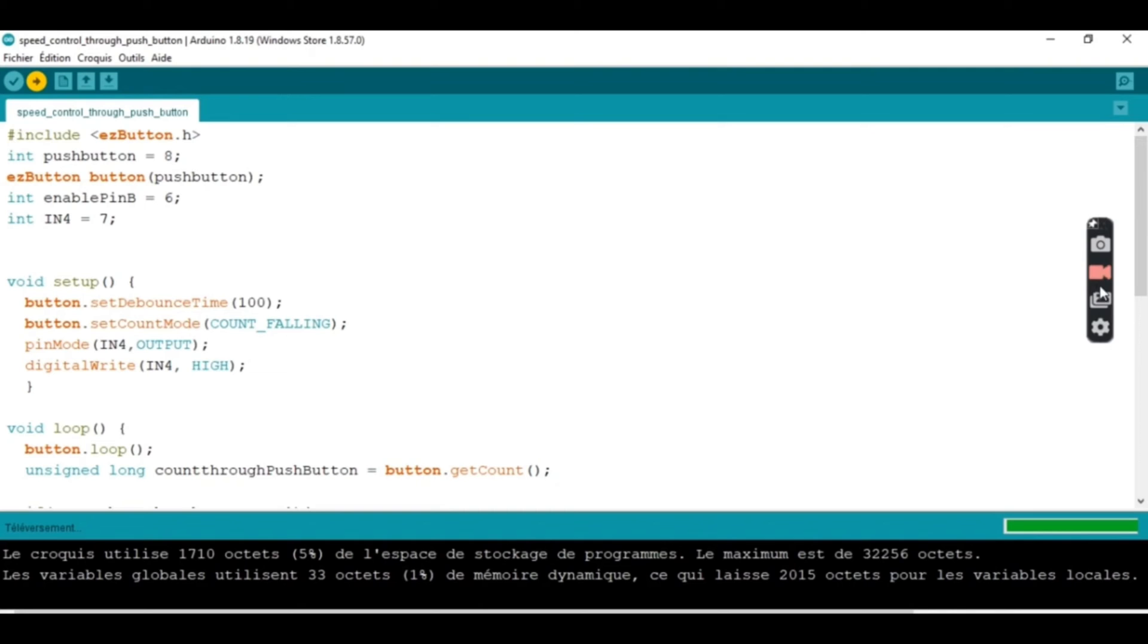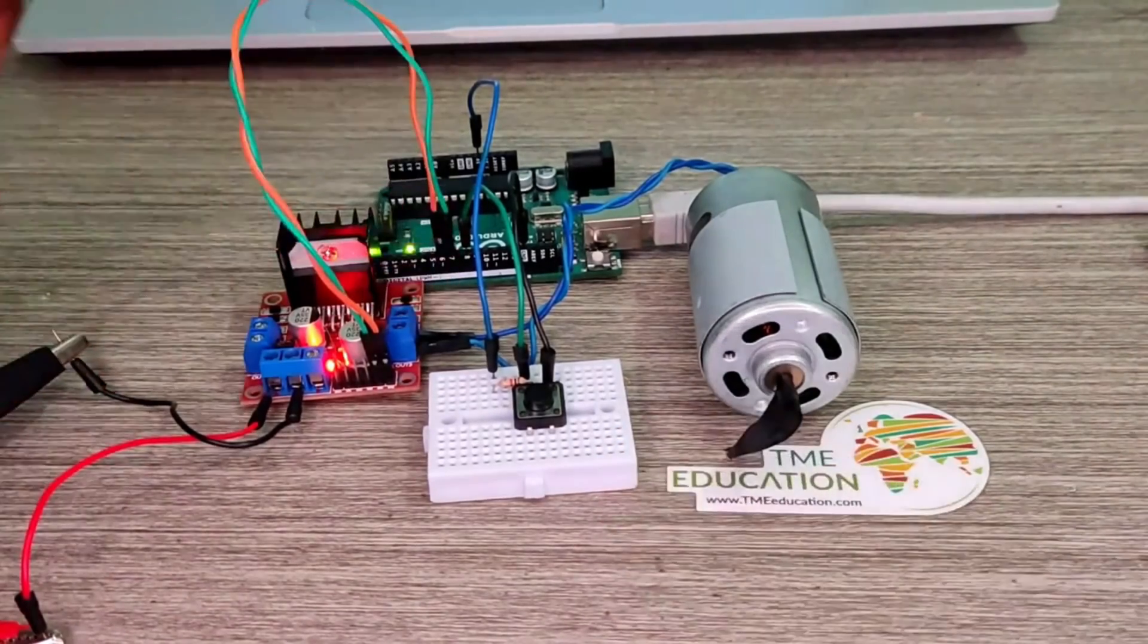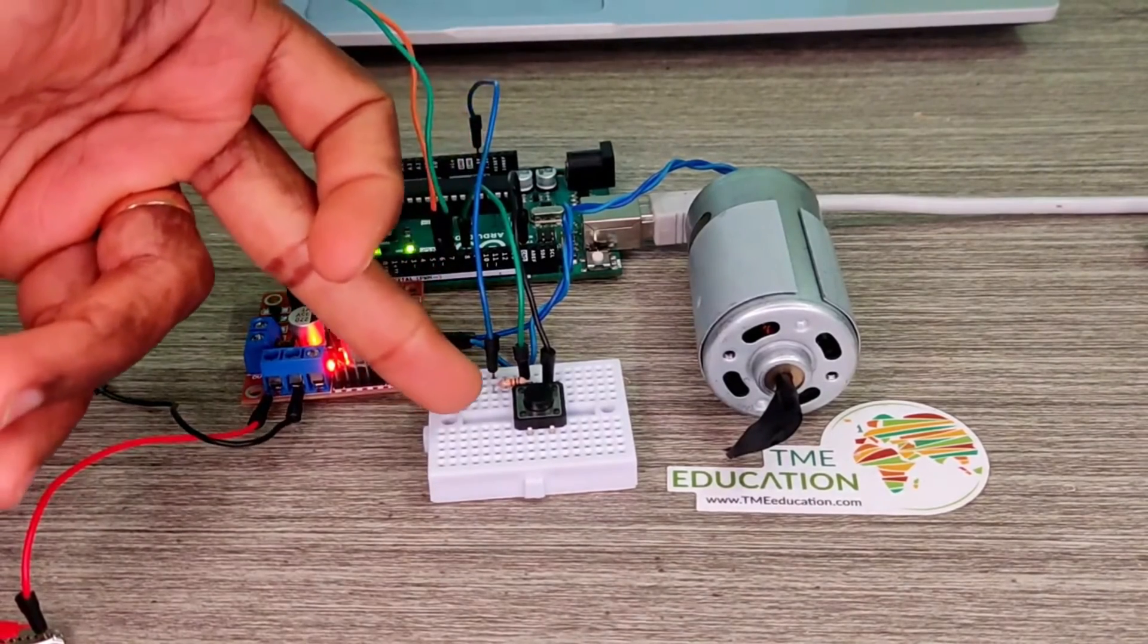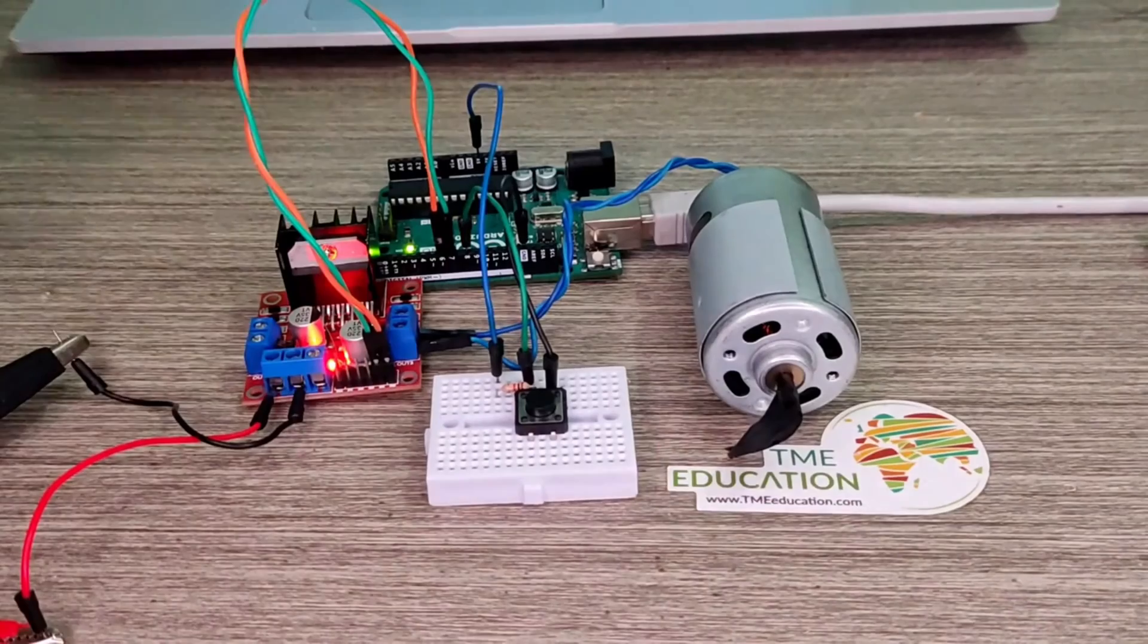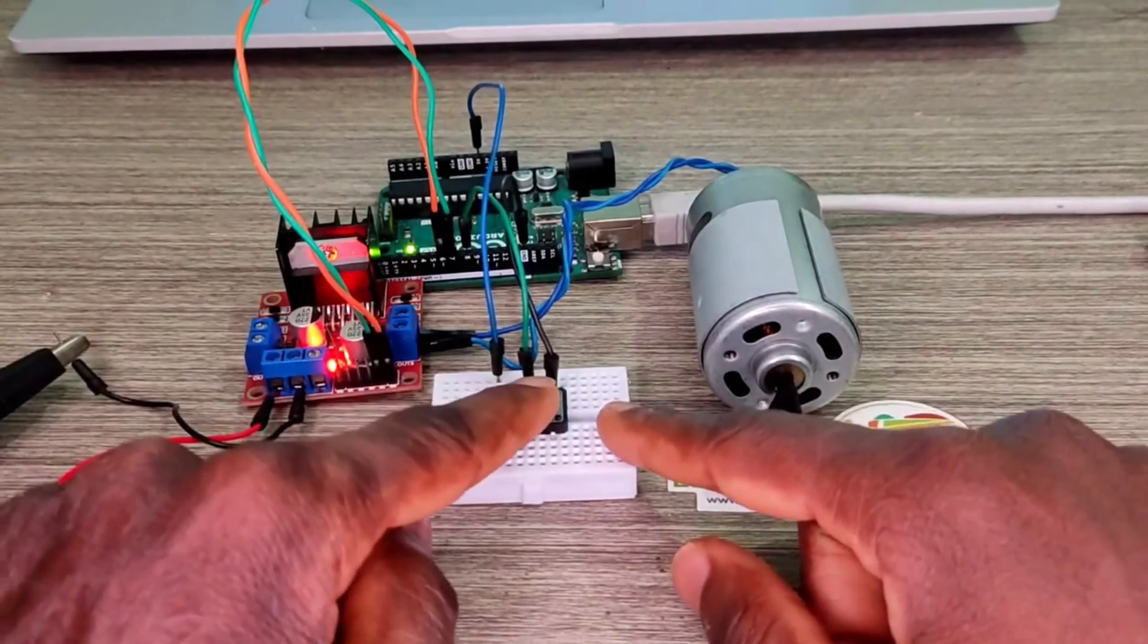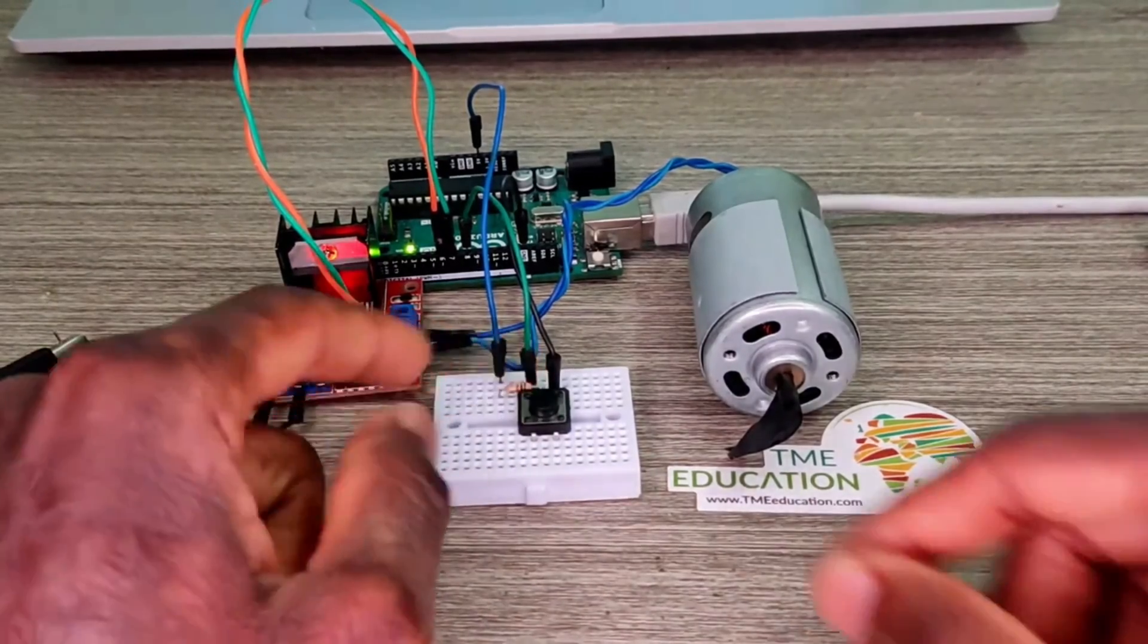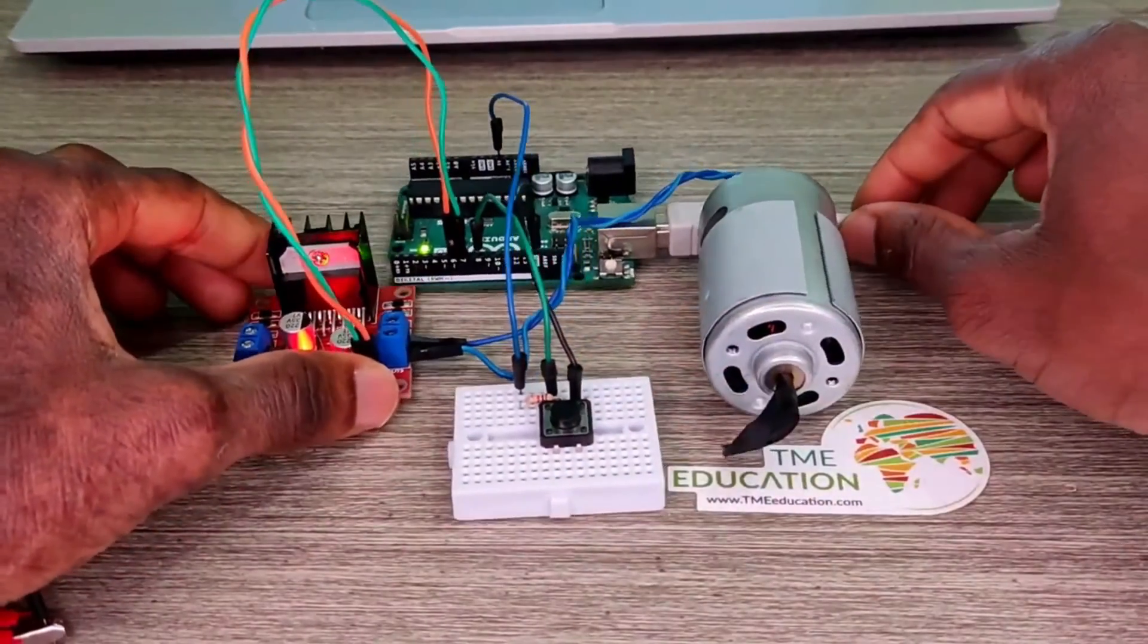I forgot something. The 5 volt must be attached to the side of the 10k ohm resistor. And pin 8 is attached to the side of the push button and to this side of the resistor. Like that. Okay, I'm so sorry for my mistake.